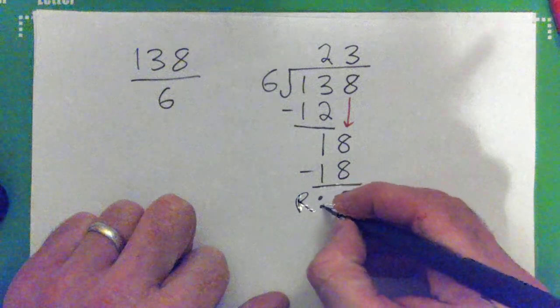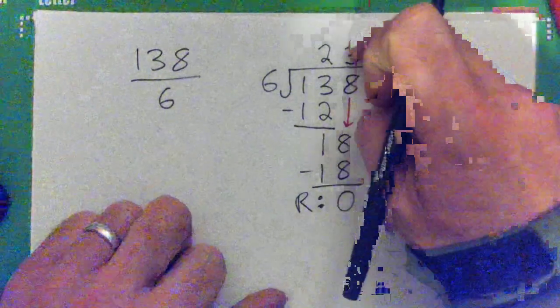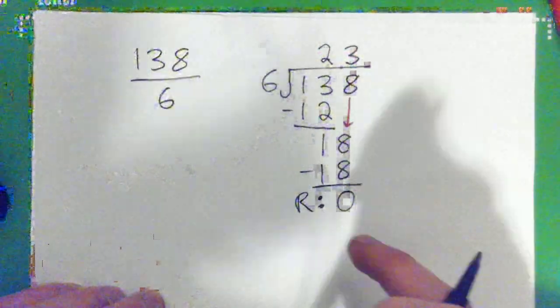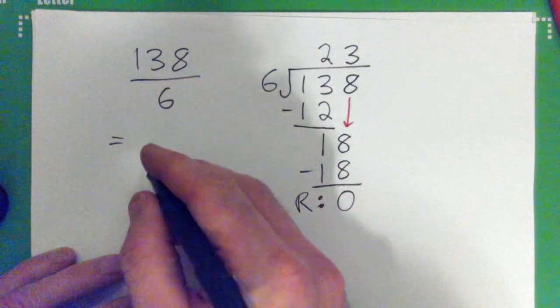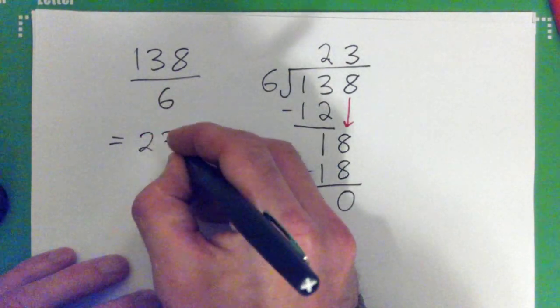And that is your remainder. R. That's 0. So, the answer is 23, and the remainder is 0. So, 138 over 6 equals 23. All right?